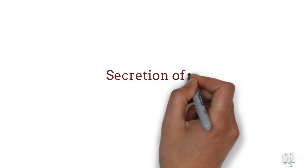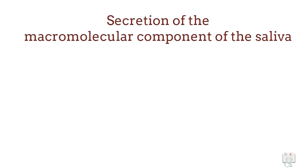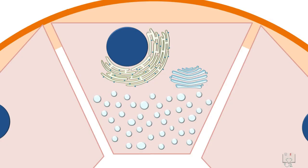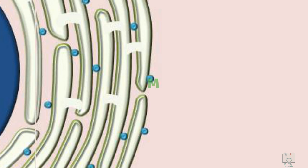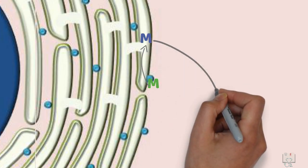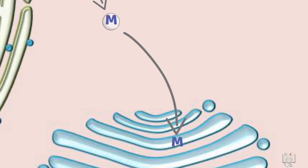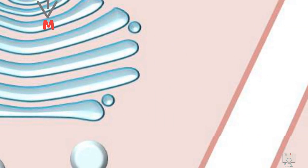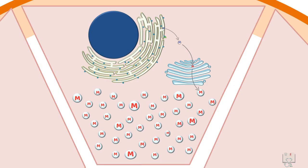The cells of the acini have abundant rough endoplasmic reticulum and Golgi complex. The attached ribosomes synthesize various macromolecules, which are then translocated to the lumen of the endoplasmic reticulum for modifications. From here, in small vesicles, these macromolecules are transferred to the Golgi complex where they undergo further modification. From there, they are stored in secretory granules in the apical cytoplasm until the cell receives an appropriate secretory stimulus.